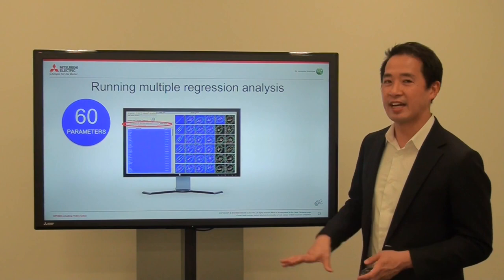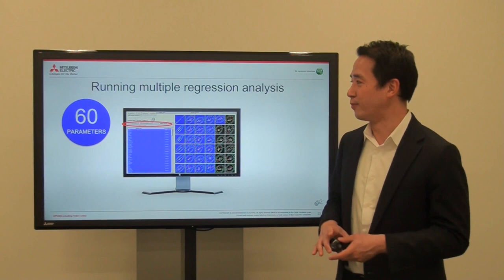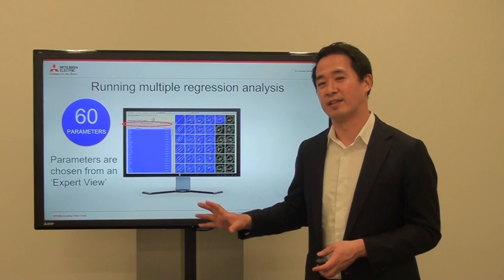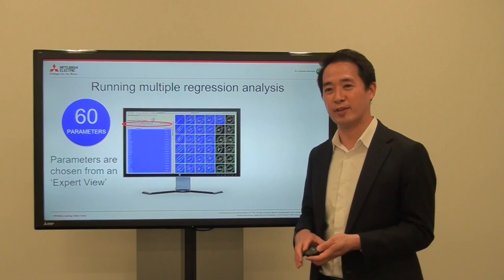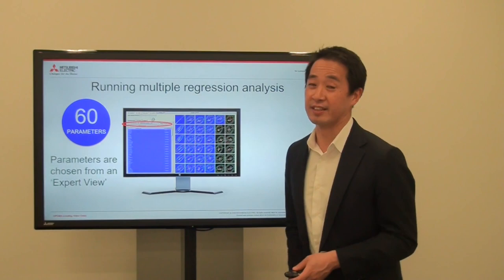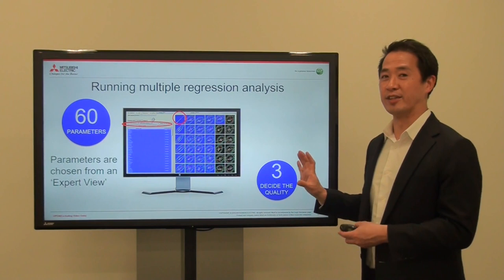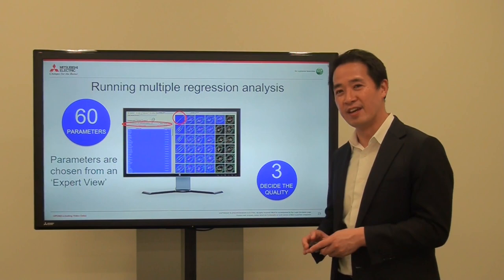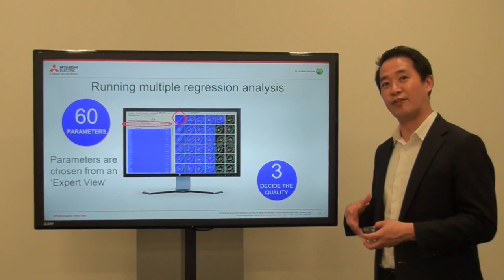First, we looked at what data we could collect, and we found out there were 60 parameters involved in the environment of the chamber. This is where it is very important to involve an expert — a data scientist would never have told you what kind of parameters are around this vacuum chamber. But working with the experts on the factory floor, we were able to collect these 60 parameters. We did some data analytics and found out that actually only three decide the quality — which meant we could throw away the other 57 parameters.